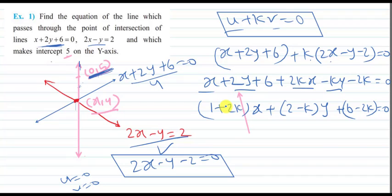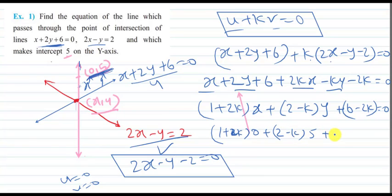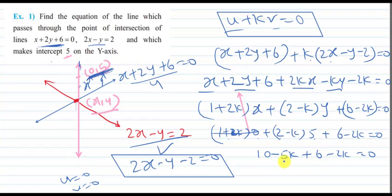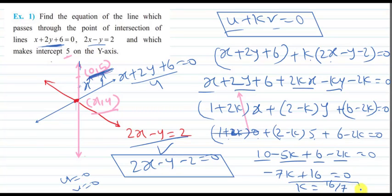Now, how to find the value of k? Since the line is passing through the point 0 comma 5 — y-intercept is 5 — that point must satisfy the equation. So just put x equals 0 and y equals 5. We get 1 plus 2k times 0 plus 2 minus k times 5 plus 6 minus 2k equals 0. That simplifies to 10 minus 5k plus 6 minus 2k equals 0, giving minus 7k plus 16 equals 0, so k equals 16 upon 7.